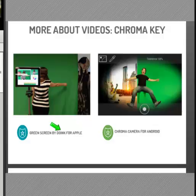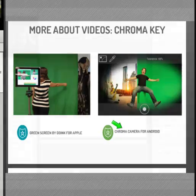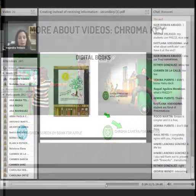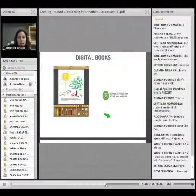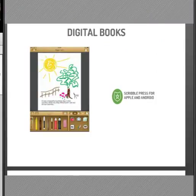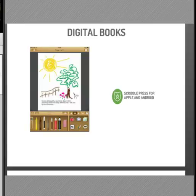And then for Android, you have Chroma Camera. This is very easy, very simple, and this one is for free. Then digital books — this is for you to create digital books in tablets. So this is the app that I use called Scribble Press and it's for Apple and Android.